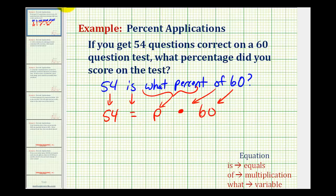Let's go ahead and rewrite this. We have 54 equals p times 60 which is 60p.